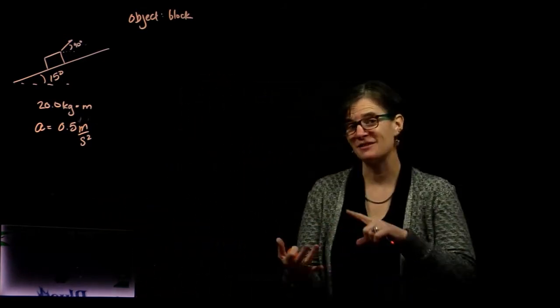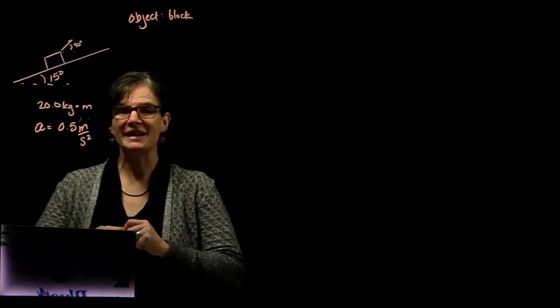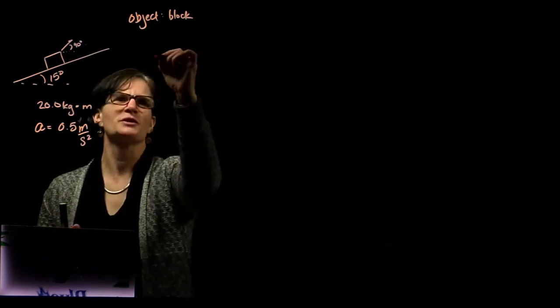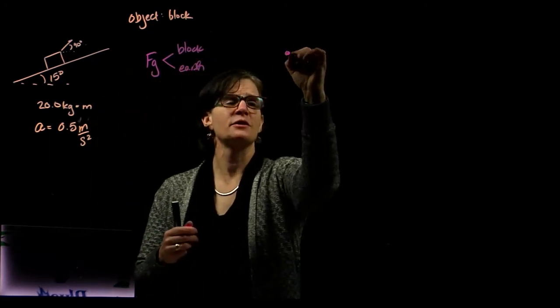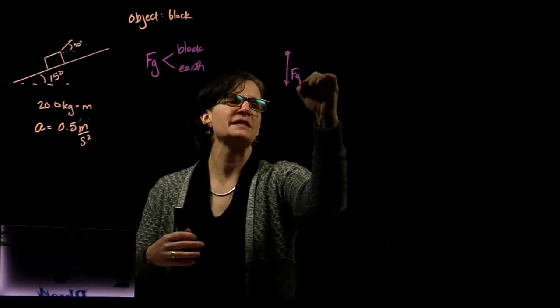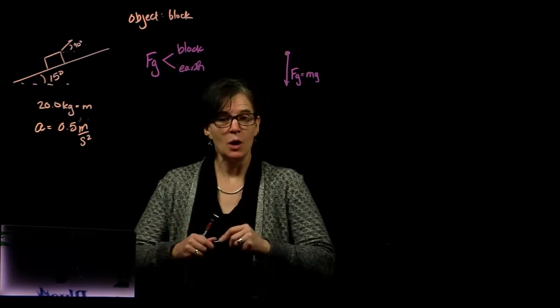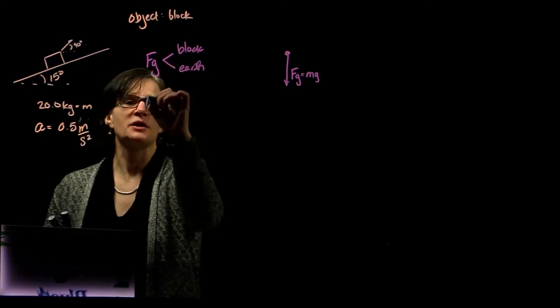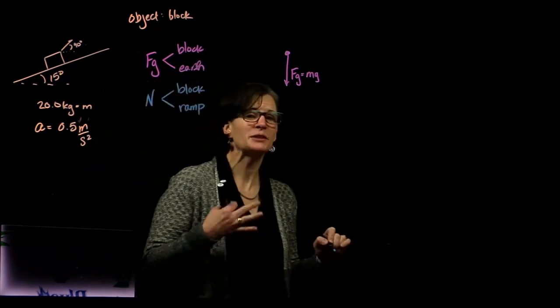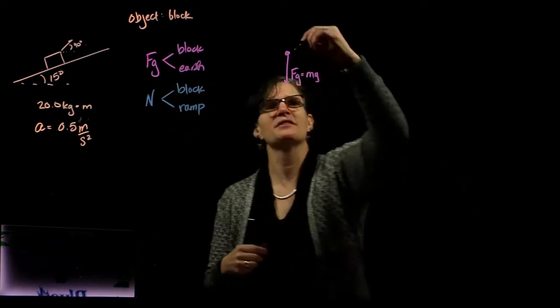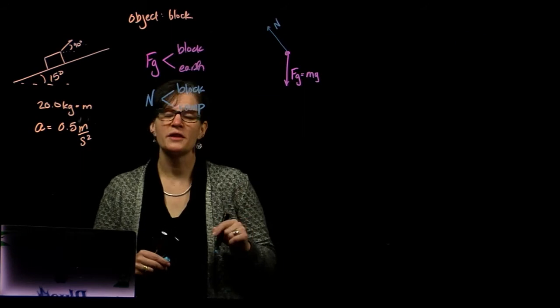Force analysis involves force interactions and the free body diagram. So what is interacting with our object, the block? We know there's the force of gravity between the block and the earth. The force of gravity always points down, equal to mg. We know the block is interacting with the ramp, so we call that the normal force, perpendicular to the point of contact. The ramp is angled at 15 degrees, so the normal force goes up and to the left.